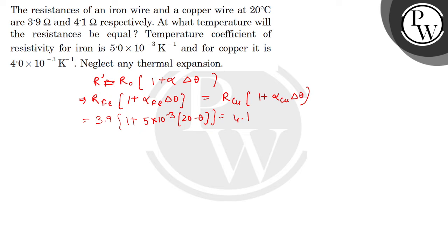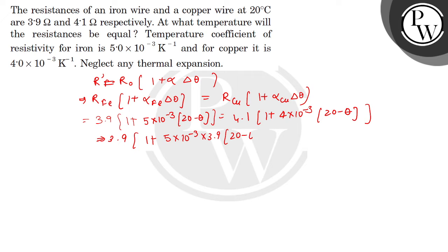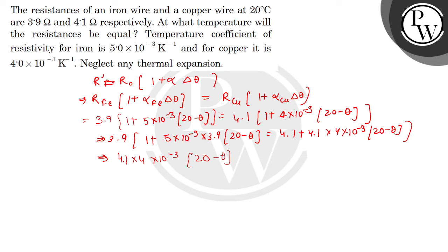Now solving this equation for θ, we expand both sides and rearrange. This gives us (3.9 − 4.1) = (4.1×4×10⁻³ − 3.9×5×10⁻³) × (θ − 20), which simplifies further to isolate θ.